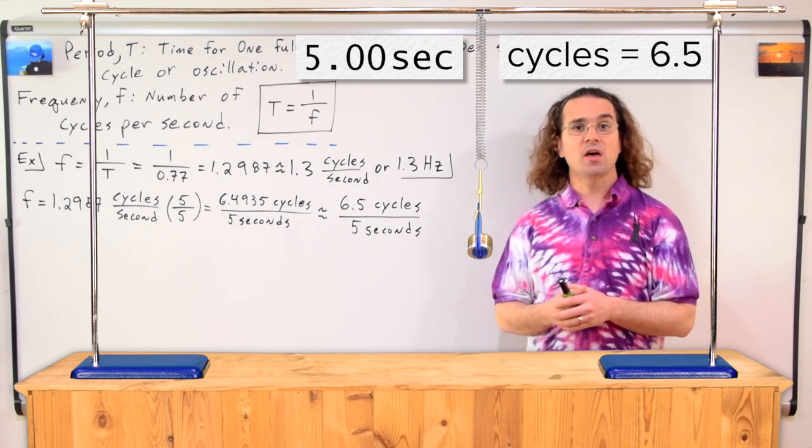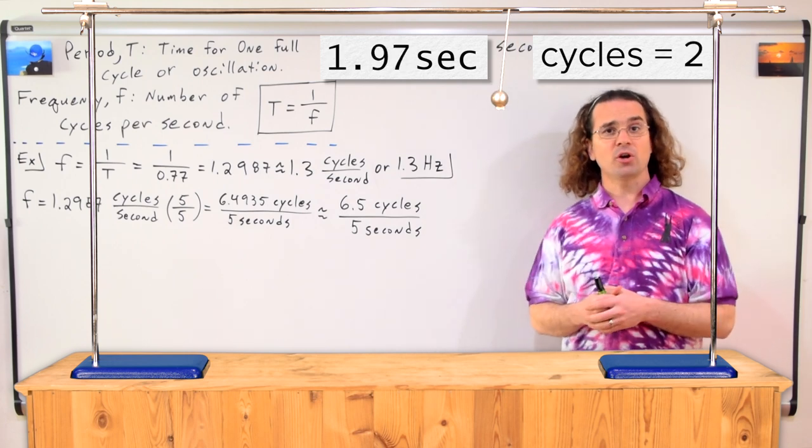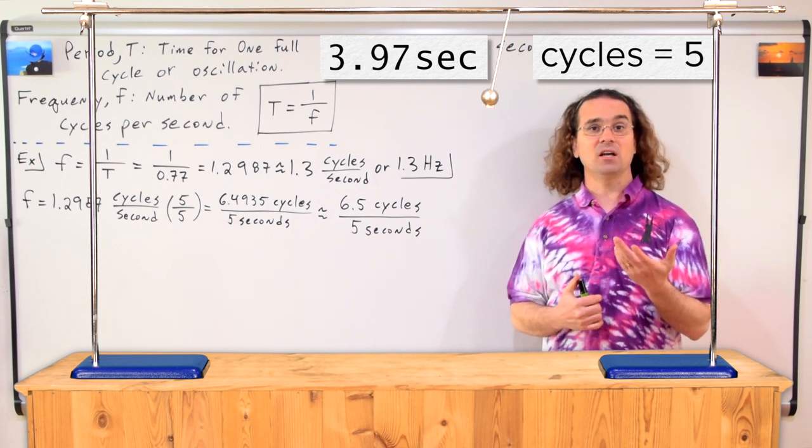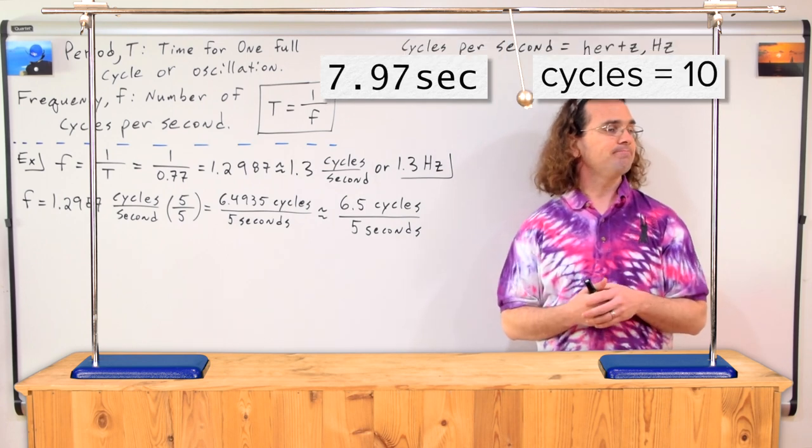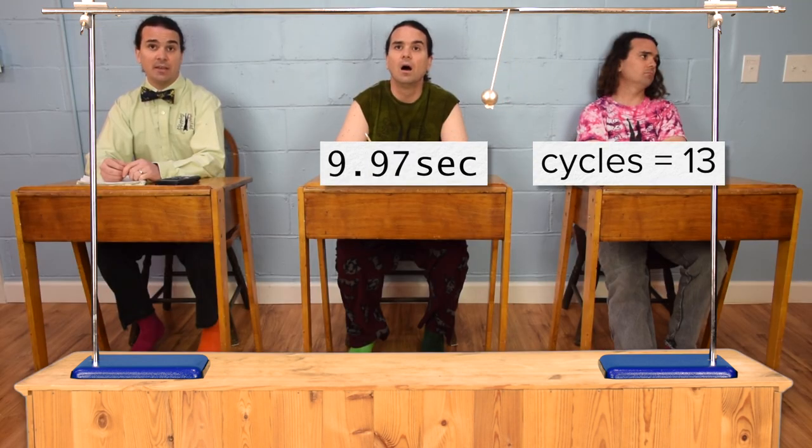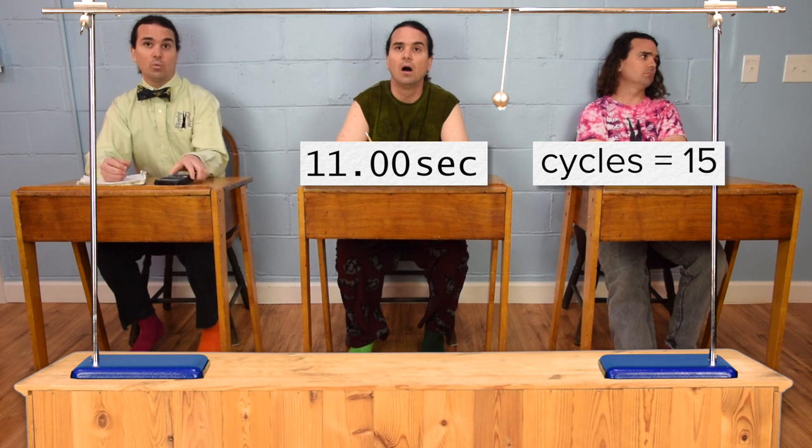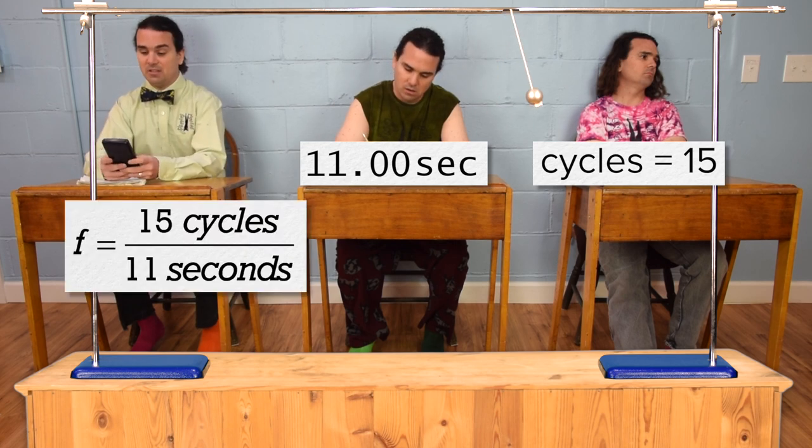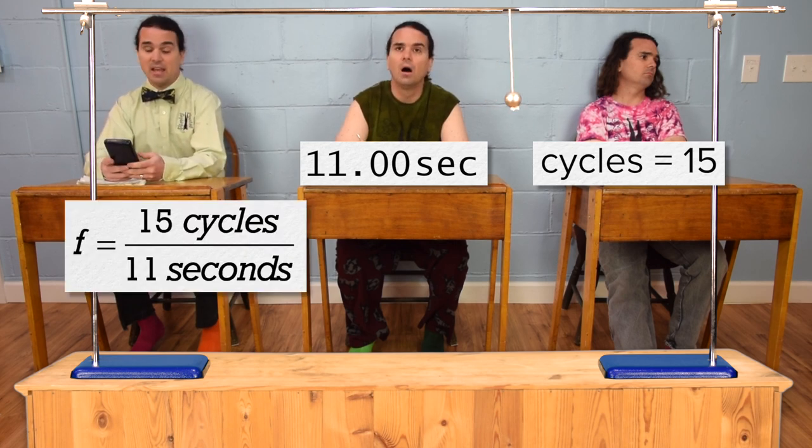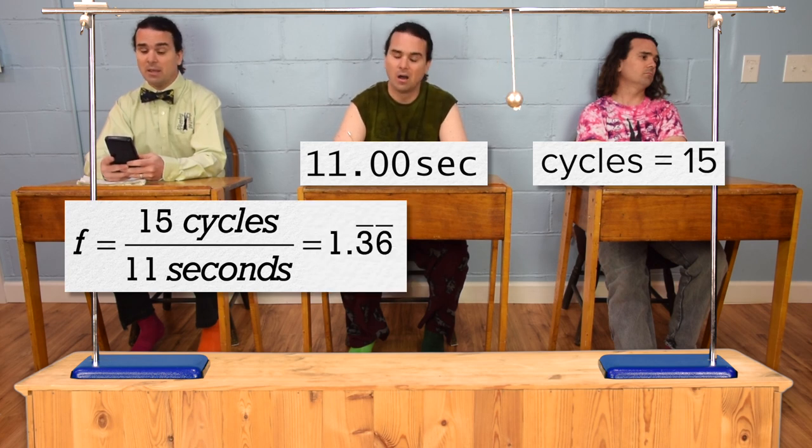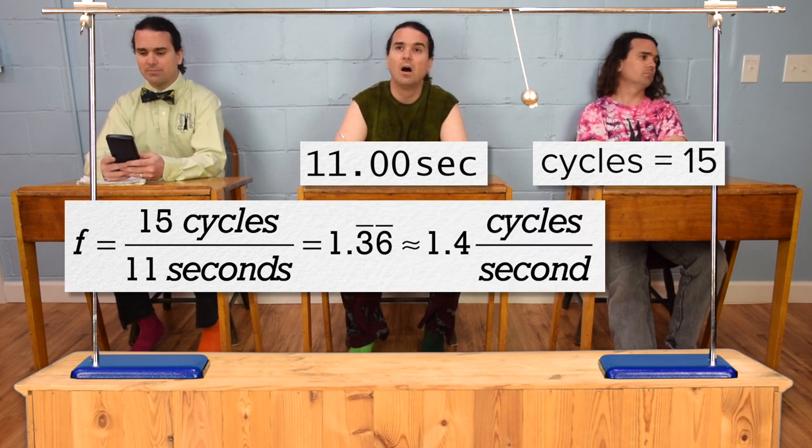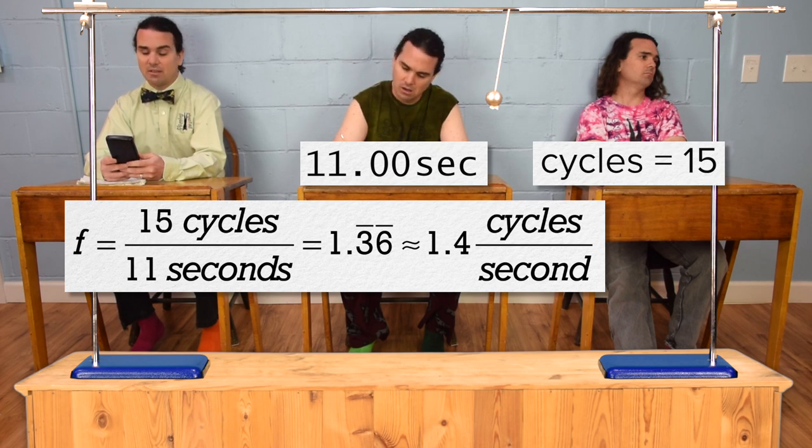Okay, let's do another example. This pendulum goes through 15 cycles in 11 seconds. Billy, what is the frequency of this pendulum? Well, frequency is in cycles per second, so we just divide 15 cycles by 11 seconds to get 1.36 with the 3.6 repeating, or 1.4 cycles per second with two significant digits.